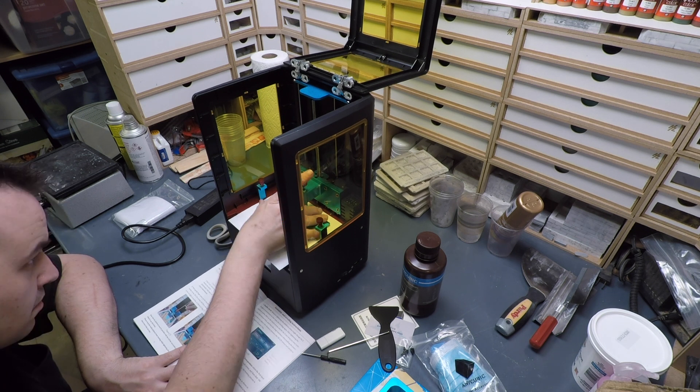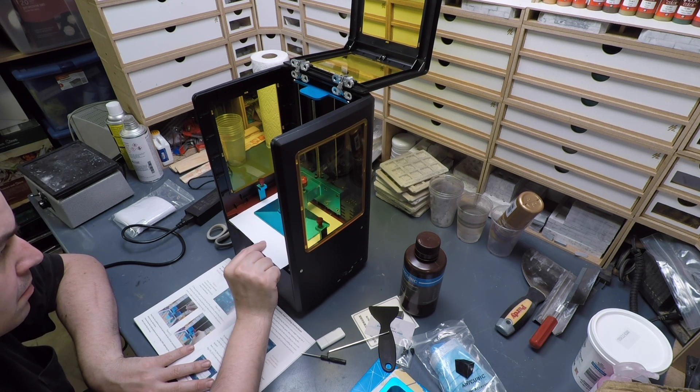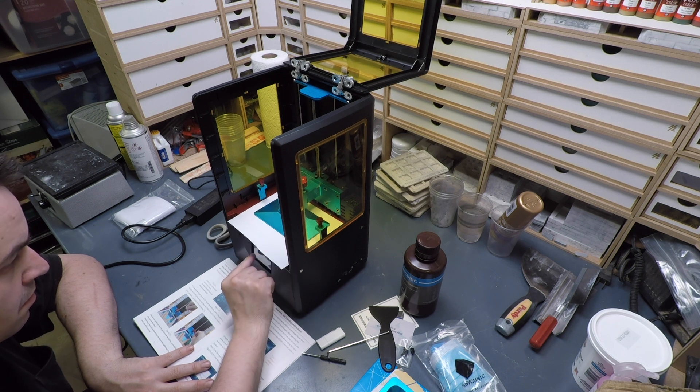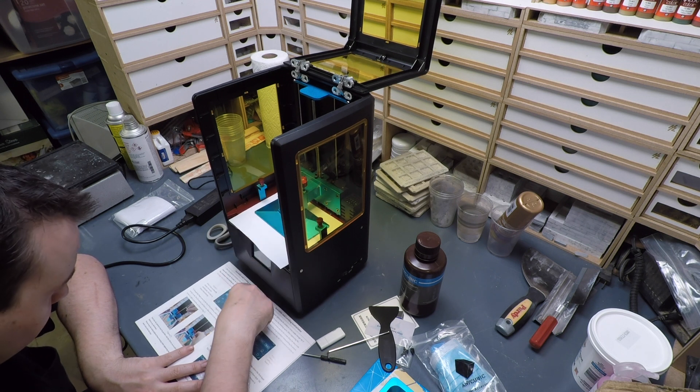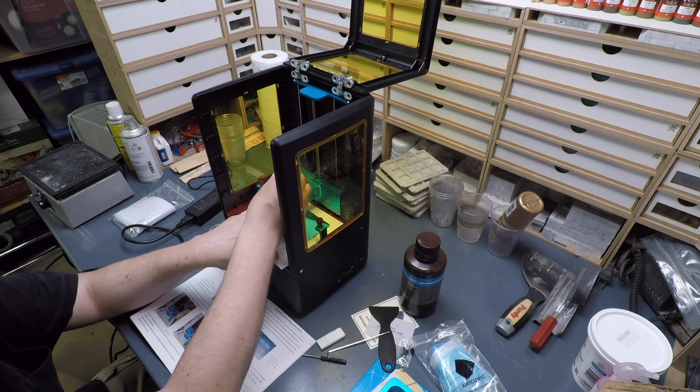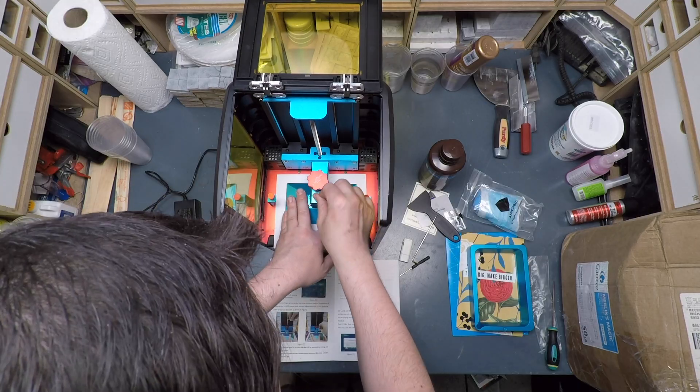So with this printer, you fill the vat of the printer with the resin and it comes with a bottle of green resin about, I would say, half a liter.